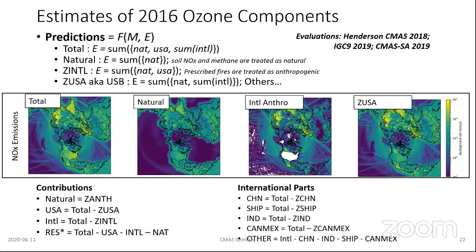After estimating natural, USA, and international, we subtract those from the total to calculate the residual — the non-linear component. We take the international component and split it into pieces: China, shipping, India, Canada, Mexico, and other. So we have lots of things to look at, and it's very exciting.